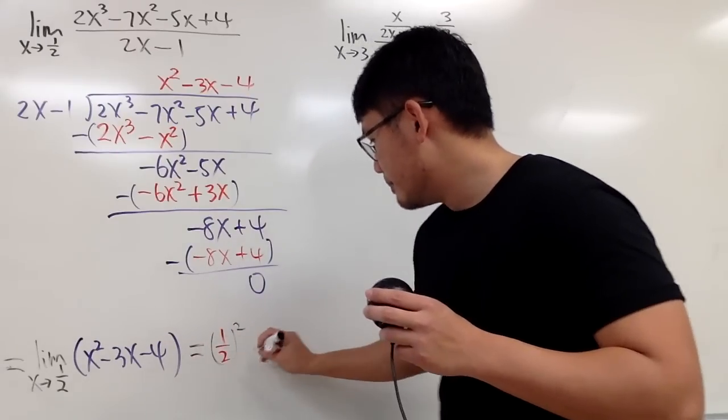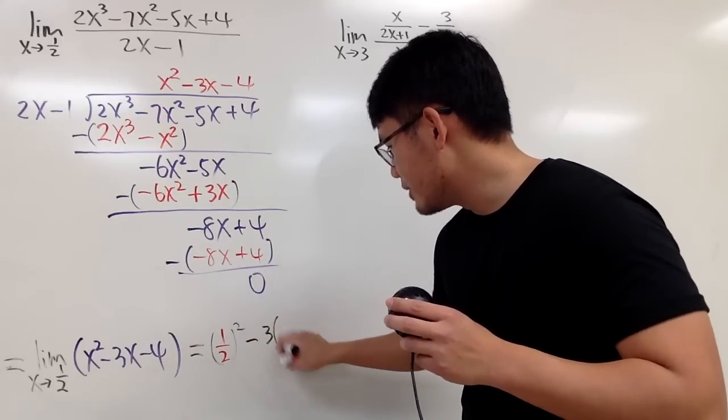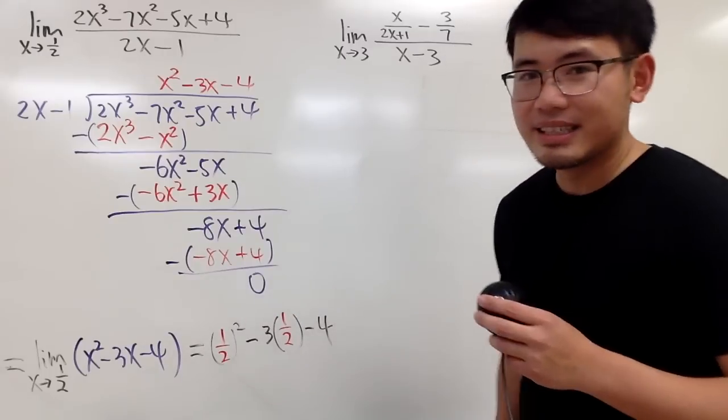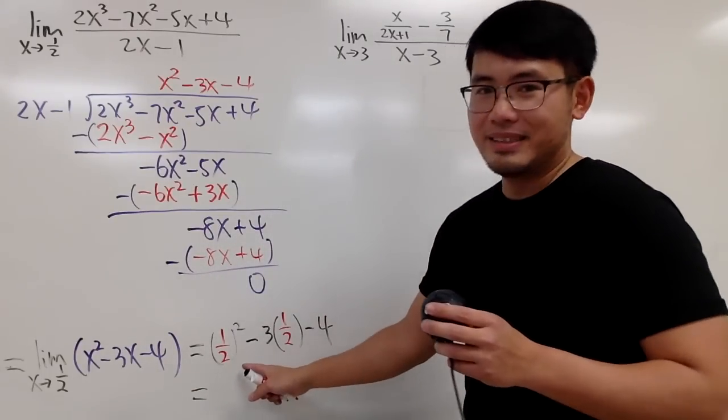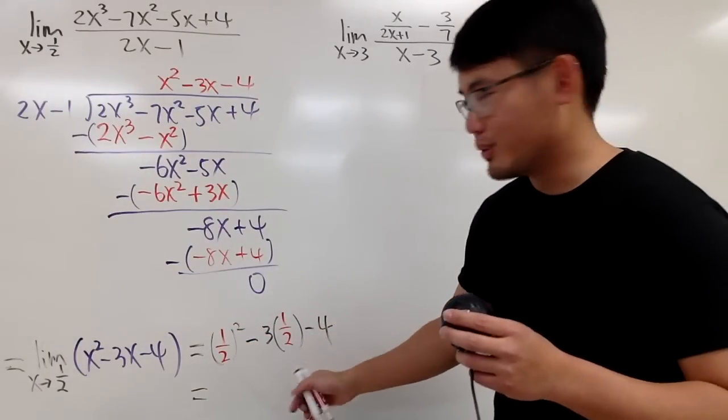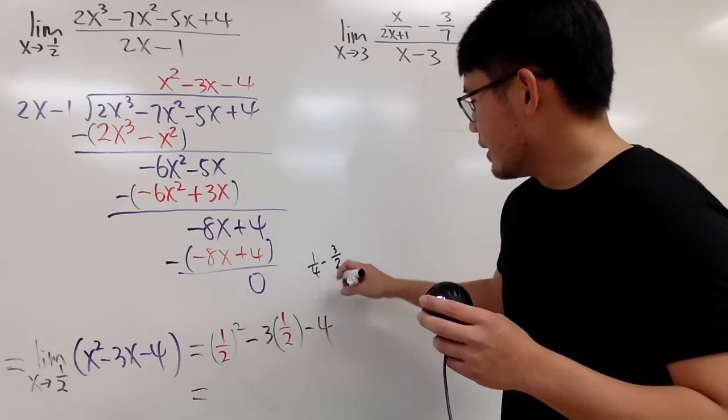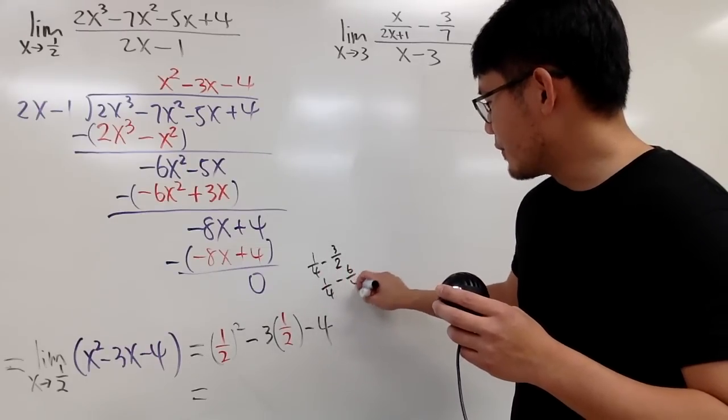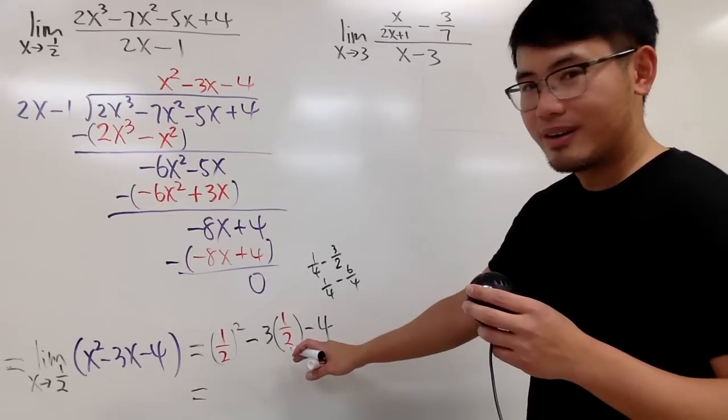And you square that. Minus 3/2. Pretty much, right? Minus 3 times 1/2. And then, minus 4, like that. Do this on your own. Oh, do this in your head. Let's see. This is 1 over 4. This is negative 3 over 2. So, if you have 1 over 4 minus 3 over 2, get the common denominator. So, it's 1 over 4 minus 6 over 4. So, in another word, this is negative 5 over 4 together.